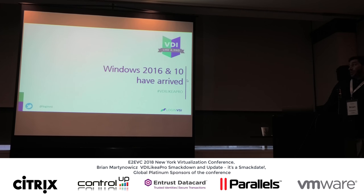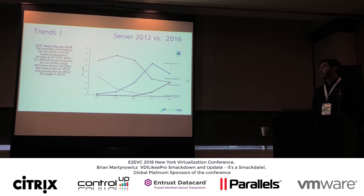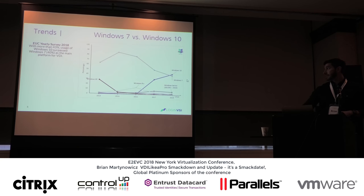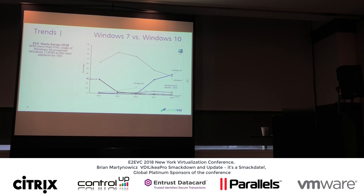Windows 2016 and Windows 10 have arrived. If you look at the EUC trend data for 2018, you'll notice that 2016 is basically taking up 25% of the server operating systems out there right now. It's important to stop focusing so much on 2012 and start focusing on 2016. And similarly, Windows 7 is now less deployed than Windows 10.